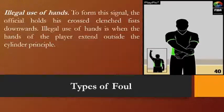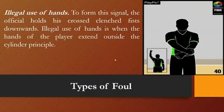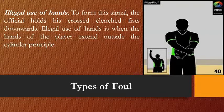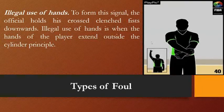Another type of foul is illegal use of hands. The official holds a cross with one fist downward to form this signal. Illegal use of hands is when the player's hands extend outside the cylinder principle — for example, swatting away the hands of another player during a rebound situation. Player A and player B battling for a rebound, and player A swats away the hands of player B, is one example of illegal use of hands.